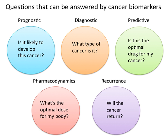Cancer biomarkers can also be used to determine the most effective treatment regime for a particular person's cancer. Because of differences in each person's genetic makeup, some people metabolize drugs differently. Decreased metabolism of certain drugs can create dangerous conditions in which high levels accumulate in the body. An example is the gene encoding the enzyme thiopurine methyltransferase (TPMT). Individuals with mutations in the TPMT gene are unable to metabolize large amounts of the leukemia drug mercaptopurine, which can cause a fatal drop in white blood cell count. Such patients are recommended to receive a lower dose for safety.